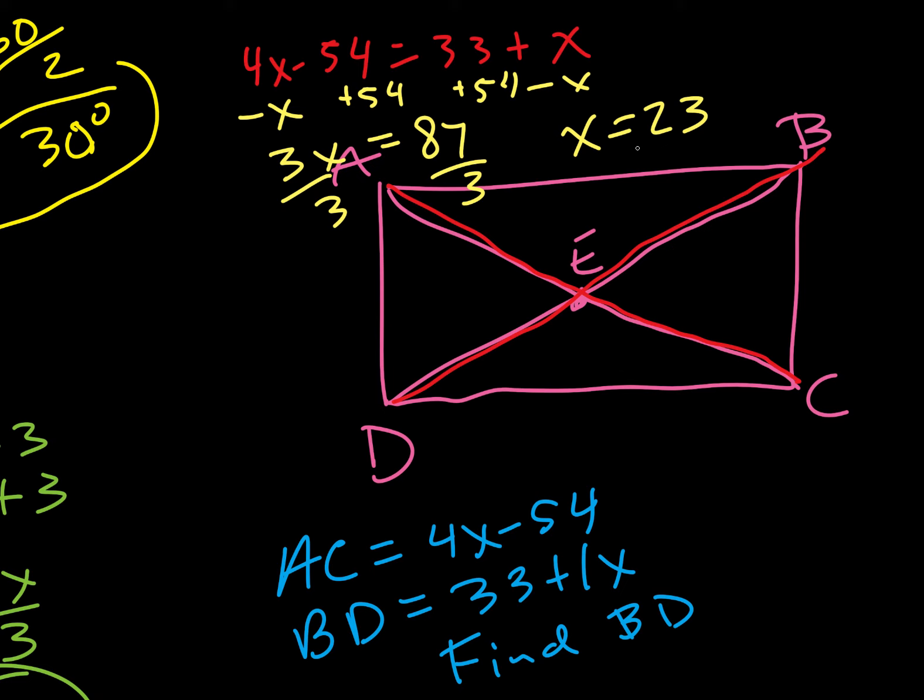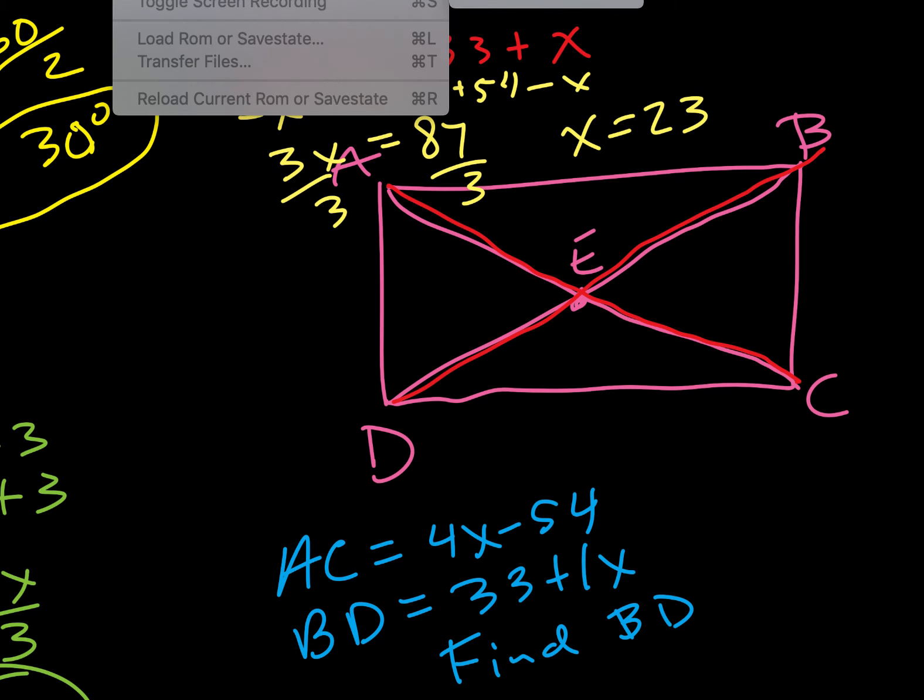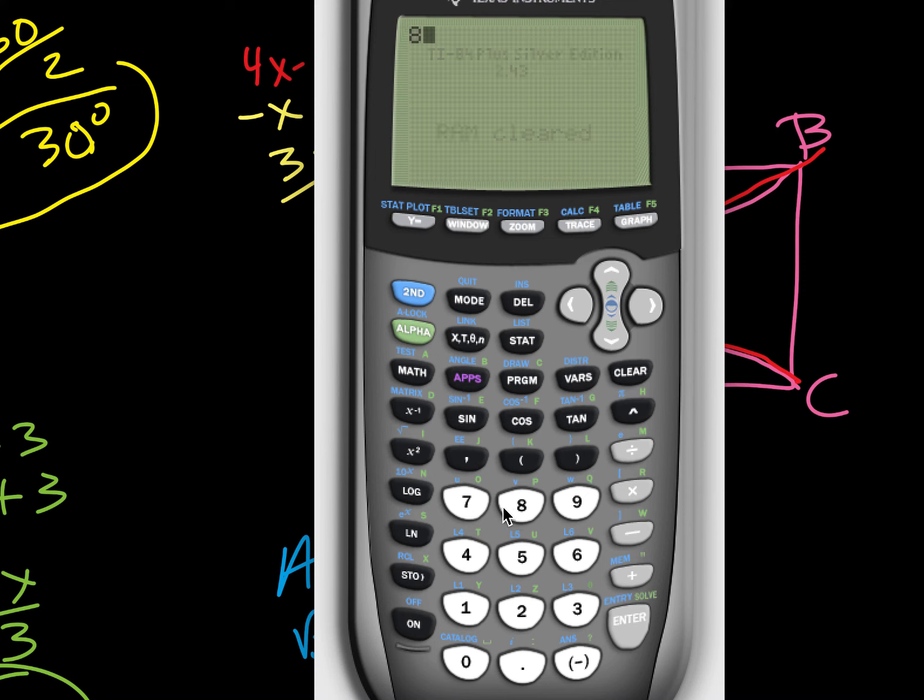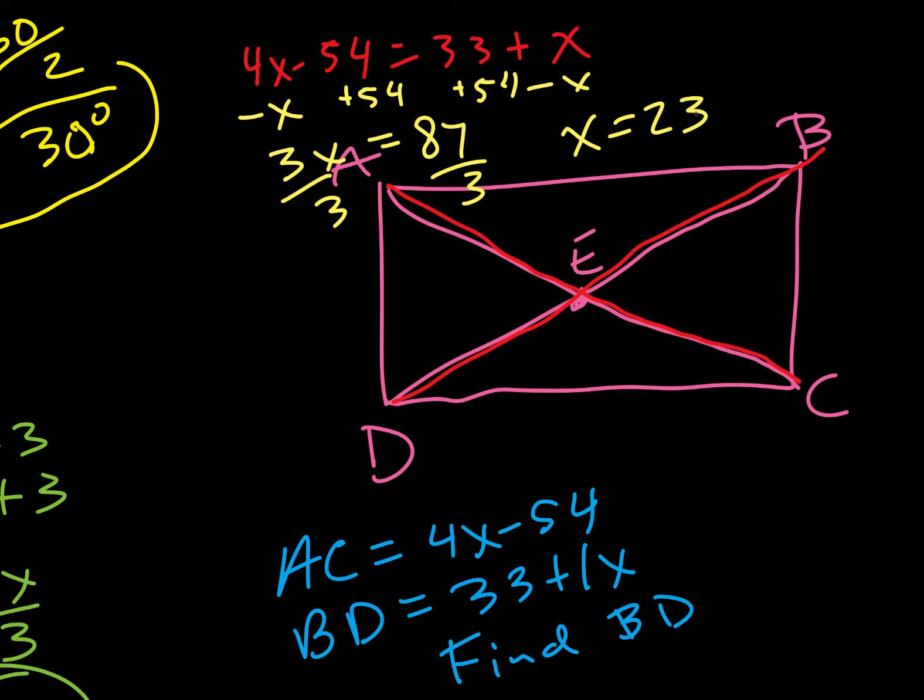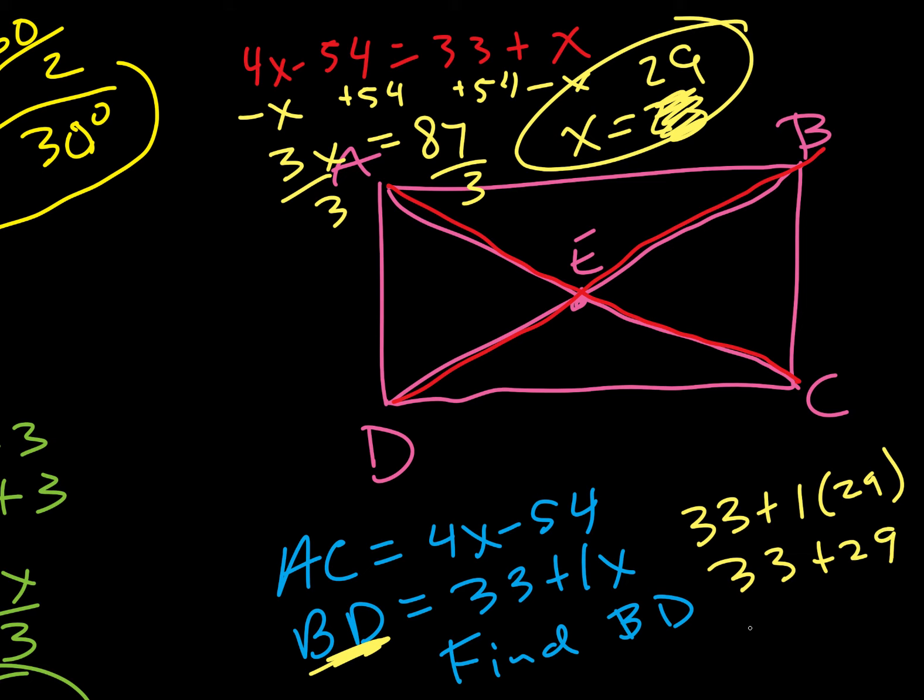Let me check that with the calculator. 87 divided by 3. 29. Okay. Messed that up, but that's okay. 29. So, that's not our answer, but we're going to use that. We want to know the value of B, D. So, now it's 33 plus 1 times 29. Or 33 plus 29. We add those. It's going to be 9, 10, 11, 12. Carry 1. 62. So, B, D is 62.